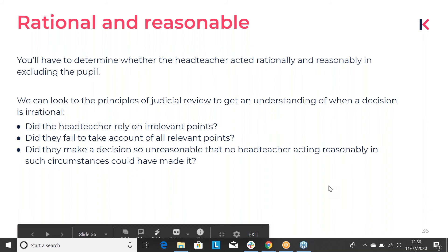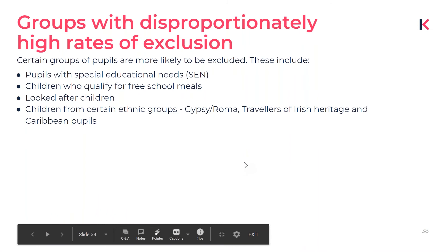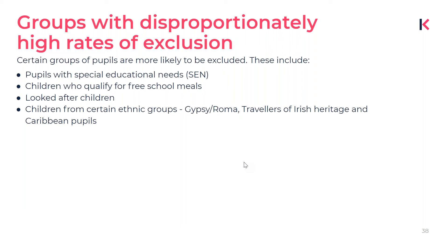When deciding whether an exclusion is fair and proportionate, you have to look at that pupil individually. All governors should be aware that some pupil groups are more likely to experience exclusion than others. Some groups have disproportionately high rates of exclusion, including pupils with special educational needs, children who qualify for free school meals, looked after children and previously looked after children, as well as certain ethnic backgrounds — for instance, children from Gypsy Roma families, travelers of Irish heritage, and Caribbean pupils.